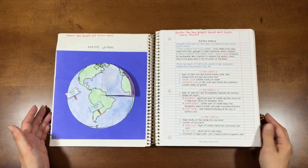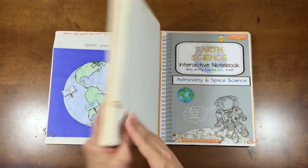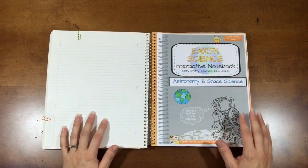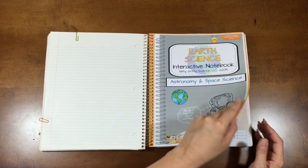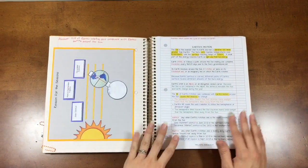The second activity I want to feature is from my astronomy and space science chapter. This chapter actually has six different activities in it and the one that I want to feature tonight is Earth's motion.